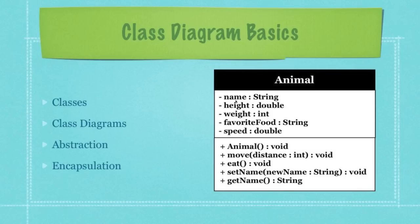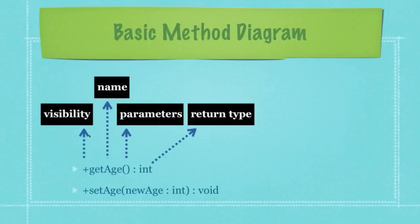Whenever you're defining an attribute inside of a class diagram, you show its visibility — meaning who can access it — its name, and then its data type. Down in the method section, you also show visibility, then the name, then inside brackets you can put parameters with their name and data type, followed by a colon and the return type. You need to include those brackets, then a colon and a return type, even when passing parameters to a method.